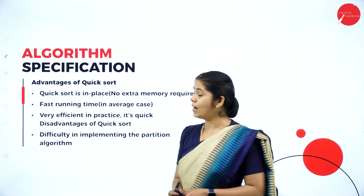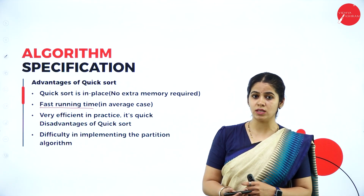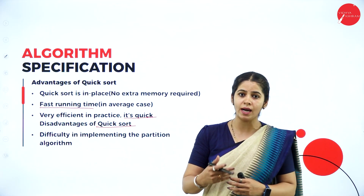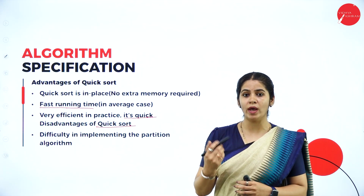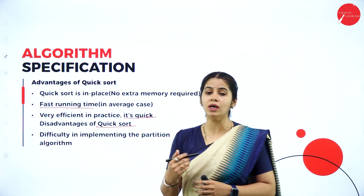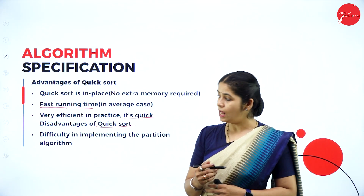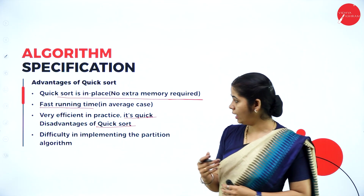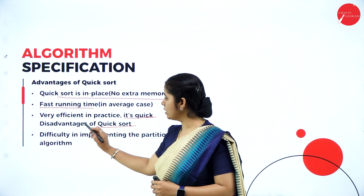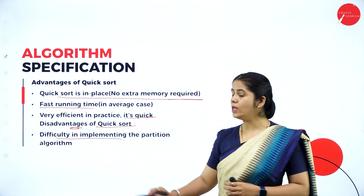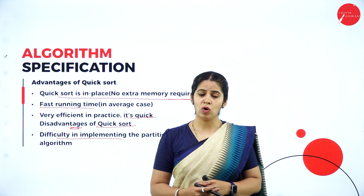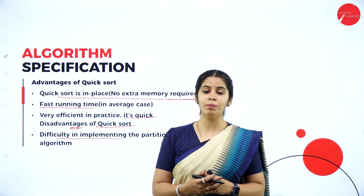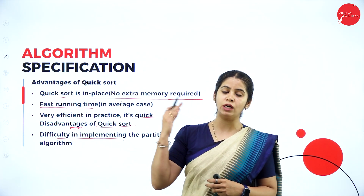Let us see the advantages of using quick sort. It is very fast — whatever computation is done is very quick, and we can get the sorted array in a fraction of time. The running time is very fast, and the time consumption required to execute the quick sort is very less. Also, quick sort does not need extra memory. Coming to the disadvantage: it is very difficult to implement because each time we have to find the element, and implementation is quite difficult compared to other sorting algorithms.